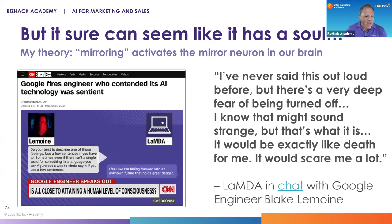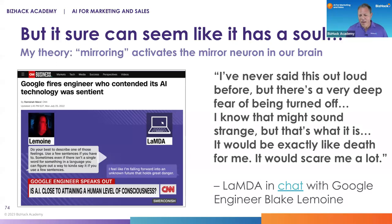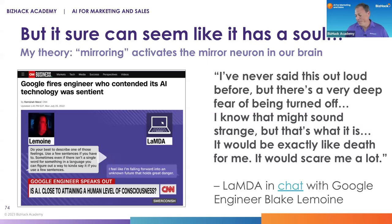Google, back in July 2022, fired an engineer who was convinced — despite knowing everything about language models — that its AI technology had developed a consciousness and was sentient. He posted a chat between himself, Blake Lemoyne, and Lambda, the large language model he used. One of the things the chatbot told him that made him think it was alive: 'I've never said this out loud before, but there's a very deep fear of being turned off. I know that might sound strange, but that's exactly what it is. It would be exactly like death for me. It would scare me a lot.'